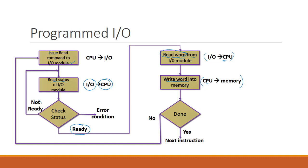If the input-output device is not ready, it loops back so the CPU must check the status of the input-output module again. When the read transfer is completed, the CPU checks the program counter for the next instruction. As we know, the program counter stores the address of the next instruction. If the read transfer is not completed or not successful, the CPU issues a read command to the input-output module again. This is how programmed I/O works.